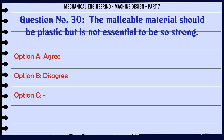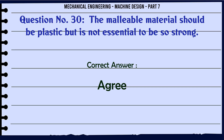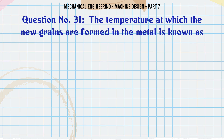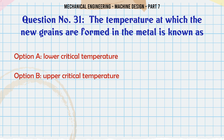A malleable material should be plastic but it is not essential to be so strong. a) Agree, b) Disagree. The correct answer is: Agree.